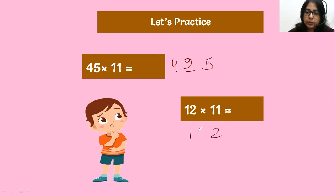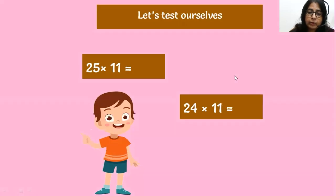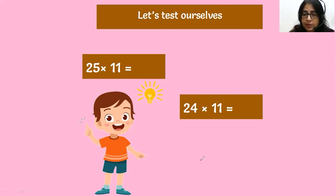In two seconds, without any steps, without any finger calculation, you are developing your brain — therefore I call it a brain development program. 25 into 11: two, five, then two plus five is seven — answer is 2, 7, 5. And 24 into 11: two, six, four. Simple and easy. I hope the word I used for this multiplication — magic multiplication — that is really a magic multiplication. Now for your assessment: 32 into 11 and 72 into 11. For 32: three, then two, then three plus two is five — answer is 3, 5, 2. For 72: seven, two, then seven plus two is nine — answer is 7, 9, 2.